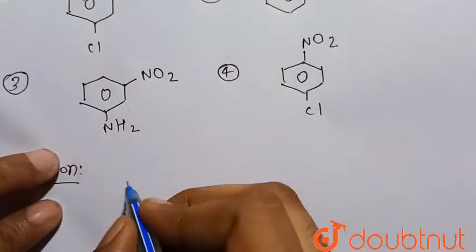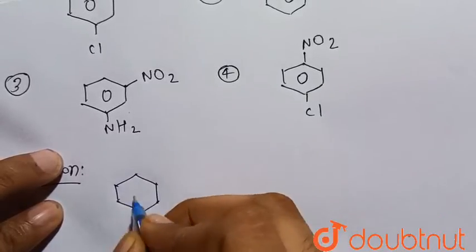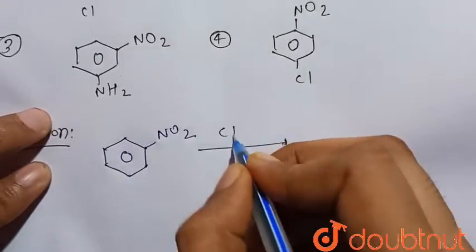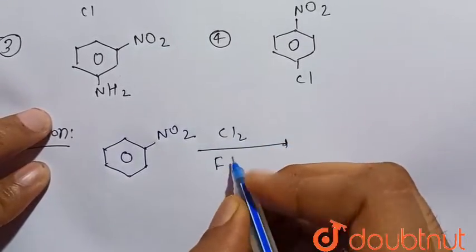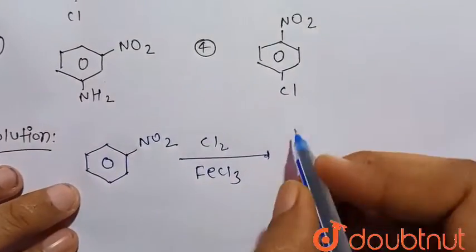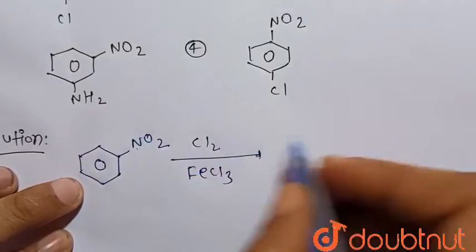Starting from nitrobenzene, first it reacts with chlorine in the presence of FeCl3, which acts as a catalyst. This is chlorination. We know that NO2 is an electron withdrawing group, that is, a highly deactivating group, so it is meta directing.